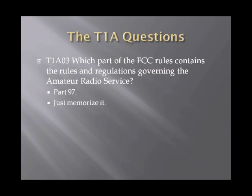The next question is: which part of the FCC rules contains the rules and regulations governing the amateur radio service? This is one of those questions you're just going to have to memorize. It's Part 97. Part 97 of the FCC rules and regulations designates what's allowed and what's not allowed for amateur radio use.